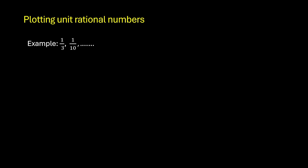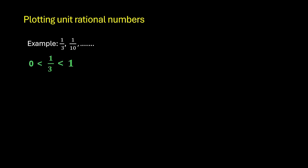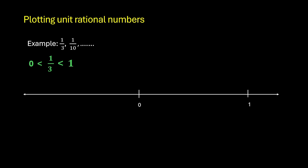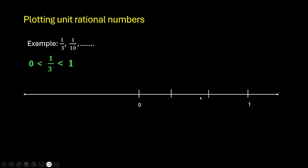Let us pick 1 by 3. 1 by 3 is actually 0.3333 and so on. Now this lies between 0 and 1. So we draw a number line and mark 0 and 1. Now the next step is very crucial and it is fixed for all the rational numbers — look at the denominator and make that many partitions. The denominator here is 3, so we will make 3 partitions between 0 and 1.